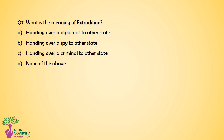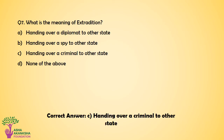Question number 7. What is the meaning of extradition? Option A: Handing over a diplomat to other state. Option B: Handing over a spy to other state. Option C: Handing over a criminal to other state. Option D: None of the above. The correct answer for this question is Option C — Handing over a criminal to other state.